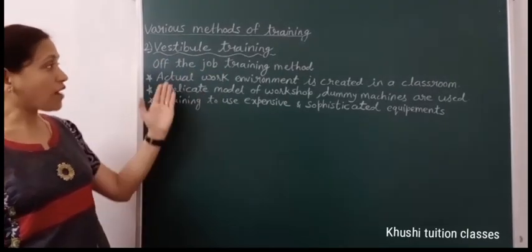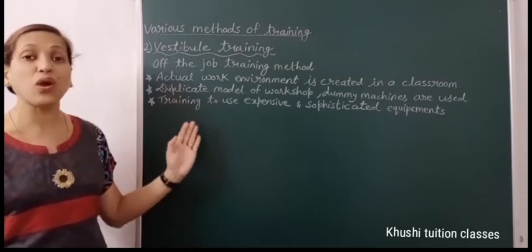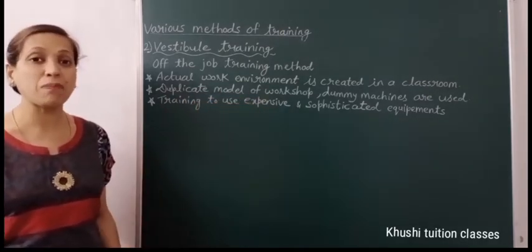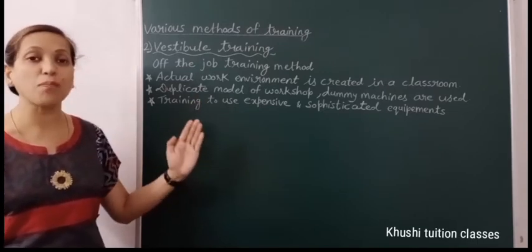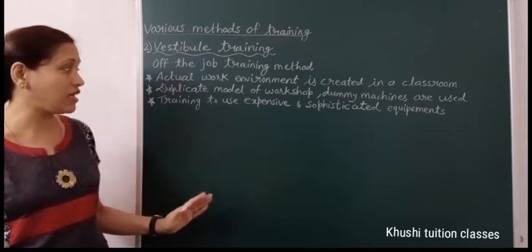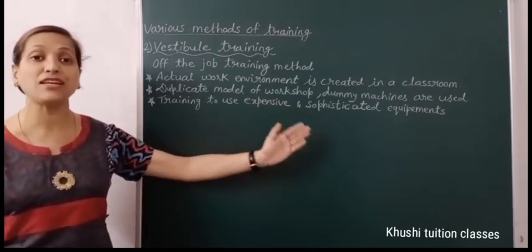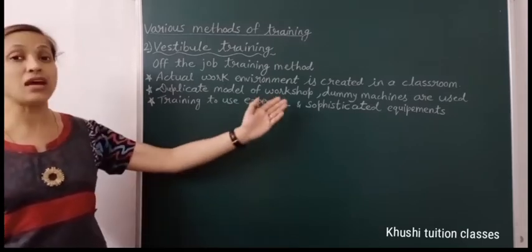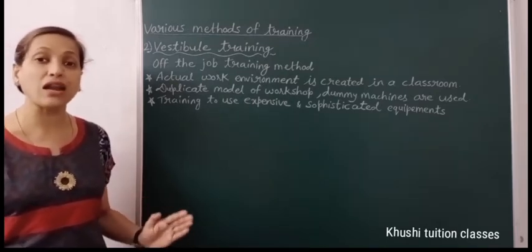The second method of training is vestibule training, which is an off-the-job training method. The actual work environment is created in a classroom — the classroom is converted into a work environment using duplicate models of the workshop and dummy machines. The training place is not an actual workshop; it is designed like a workshop but is a duplicate. The machines used for training are dummy machines, not original ones. This training is very important for workers who need to use expensive and sophisticated equipment, as they are first trained on dummy machines to prevent any damage to the original machines in the factory.